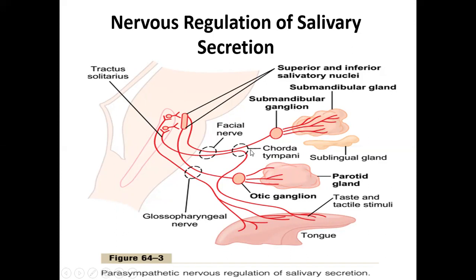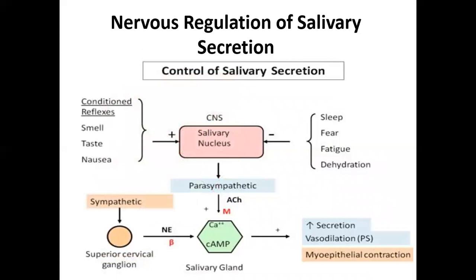The sympathetic ganglia in the neck also send innervation to enhance saliva production, especially the protein component. Importantly, in the oral cavity, the parasympathetic and sympathetic systems are not antagonistic — they work synergistically. Both systems enhance saliva production here, unlike most other organs where they oppose each other.